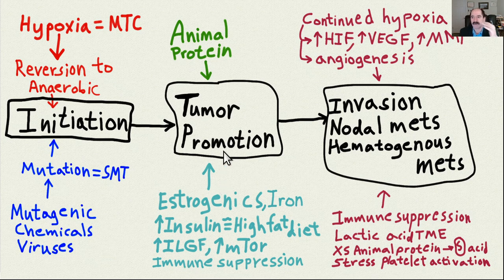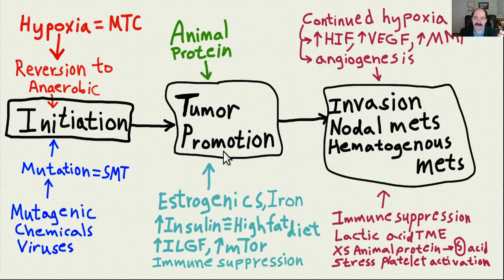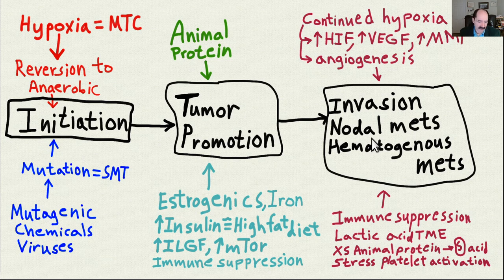Immunosuppression also increases the risk of cancer spread. You need your immune system to suppress cancer. A cancer as small as one centimeter will routinely release a million or more cancer cells per day into the blood, but your immune system plucks them all out or they die and can never establish growth in a distant location. So you need a good immune system. If you're preventing tumor promotion, you're also preventing growth of metastases.